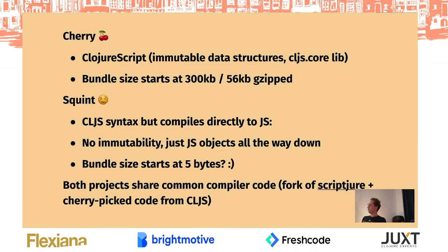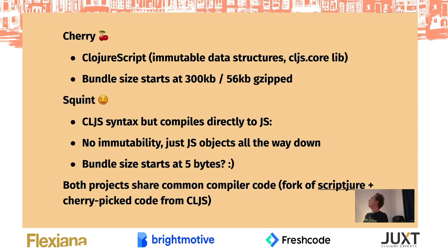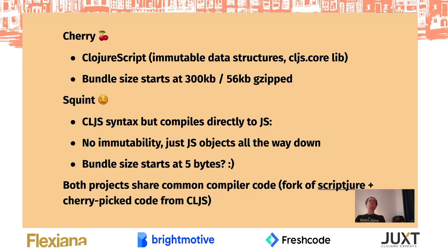One is called Cherry and the other is called Squint. Cherry is named because I cherry-picked a lot of things from ClojureScript. Squint is named because if you squint a little bit, it's very much like ClojureScript — but it's not ClojureScript. Cherry is a ClojureScript compiler that comes with immutable data structures and the CLJS core library, pre-compiled with Google Closure to advanced-compiled JavaScript into an NPM library that is shared with all compiled Cherry programs. This is how we avoid shipping ClojureScript for every library. There is one downside: the bundle size starts at 300 kilobytes — 65 kilobytes gzipped.